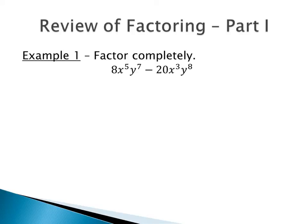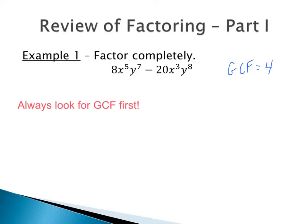Anytime that we're factoring we always want to look for a greatest common factor first. We look at our two terms: 8x to the fifth y to the seventh and negative 20x to the third y to the eighth. The greatest common factor between 8 and 20 is 4 — the largest number that goes into both, which you can find by listing factors of each and identifying the largest in common.